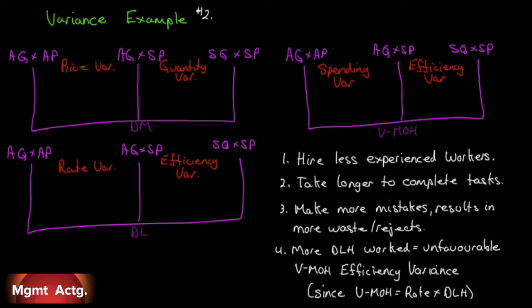In this example, we're going to start with the first decision in labor instead of materials. We're going to hire some less experienced workers so we can pay them less. We're going to try to save money here. So we have a favorable rate variance. But they take longer to complete tasks. And if they take longer to complete tasks, that will result in an unfavorable efficiency variance.